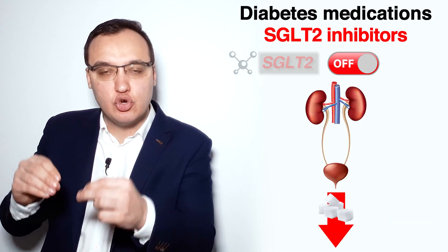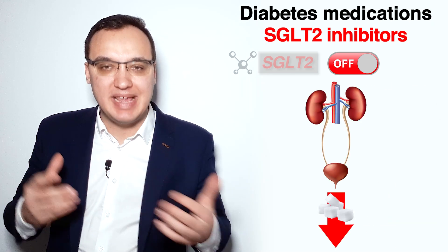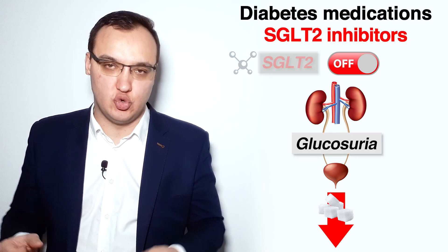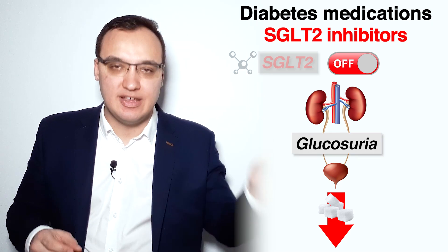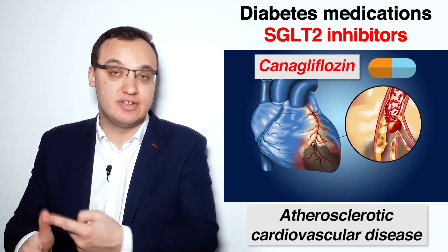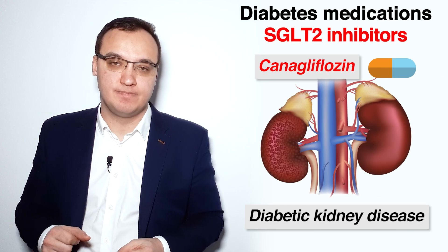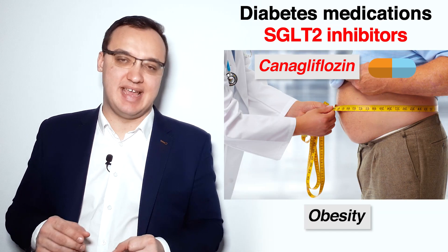SGLT2 inhibitors will inhibit this molecule, and this means that glucose will now instead be excreted through the kidneys into the urine. This is what we call glucosuria, meaning glucose in the urine. Canagliflozin and the SGLT2 inhibitors in general are good for patients with atherosclerosis, cardiovascular disease, heart failure, diabetic kidney disease, and also obesity.